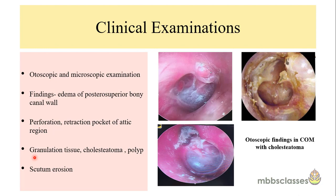If the patient has a history of ear discharge suggestive of an atticoantral type of COM, the first examination to be done is otoscopic and microscopic examination. The atticoantral type of chronic otitis media is most commonly associated with intracranial complications and is associated with cholesteatoma and granulation tissue. On examination there may be edema of the posterior superior bony canal wall, perforation or retraction of the attic region, granulation tissue, polyps, cholesteatoma, or scutum erosion.